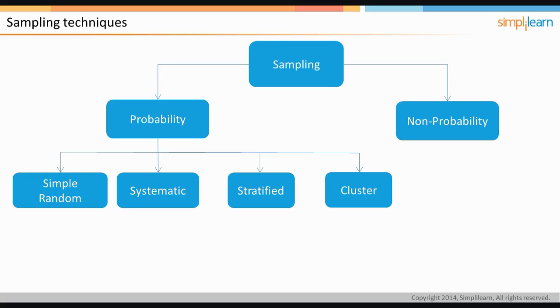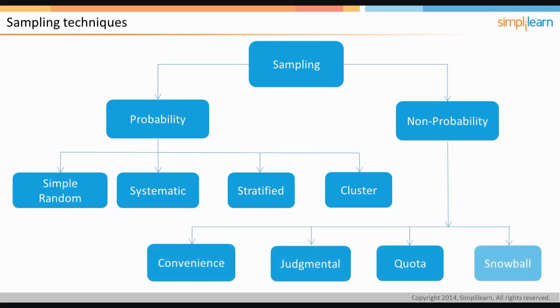Non-probability sampling is further classified into convenience, judgmental, quota, and snowball techniques. Convenience sampling attempts to obtain a sample that is convenient to collect, like interviewing people in a railway station.